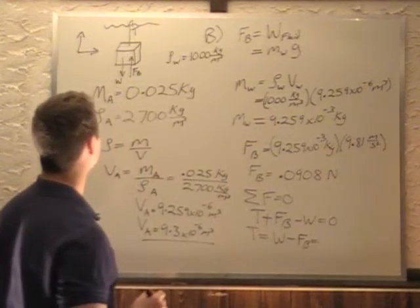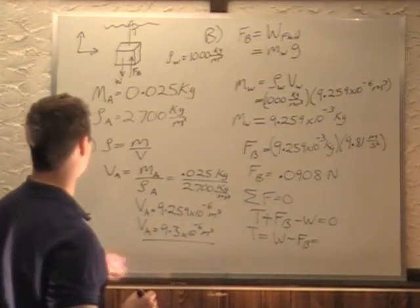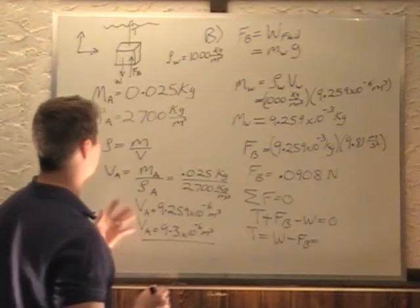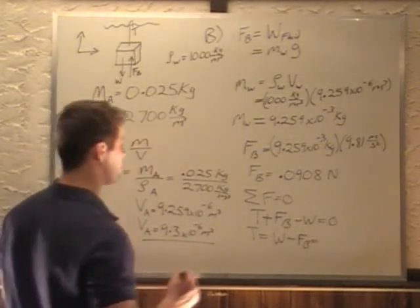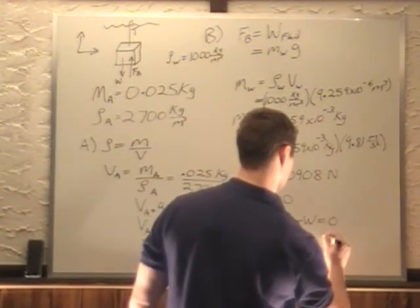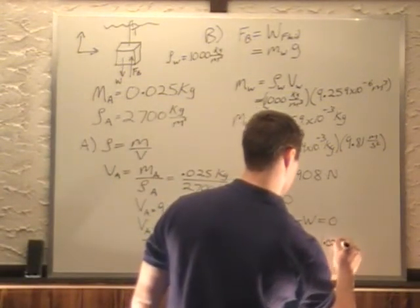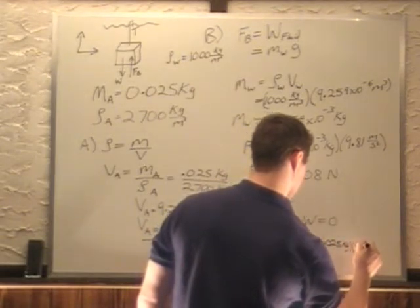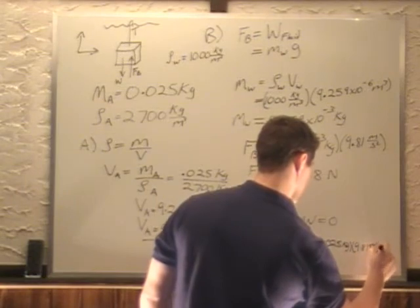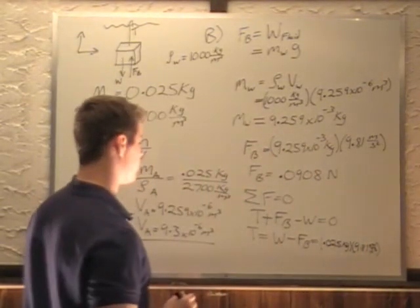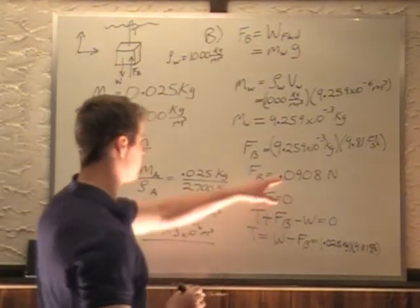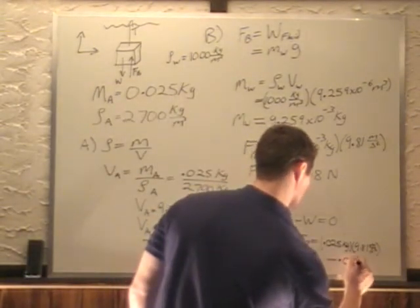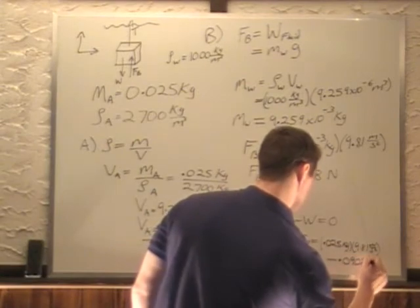Weight, we haven't actually figured out yet, but we do know the mass times g is 9.8. We put this in, we got mg is 0.025 kilograms times 9.81 meters per second squared. We have to subtract off our buoyancy force, which we figured out to be 0.0908 newtons.